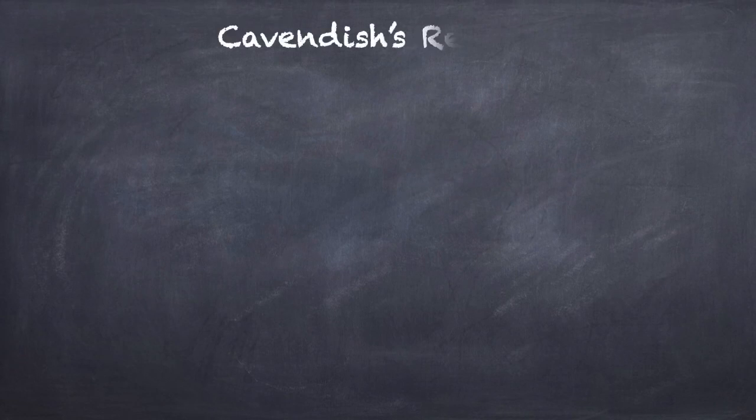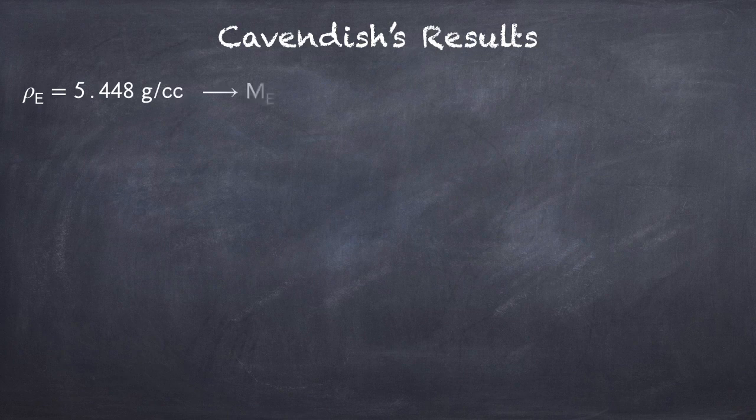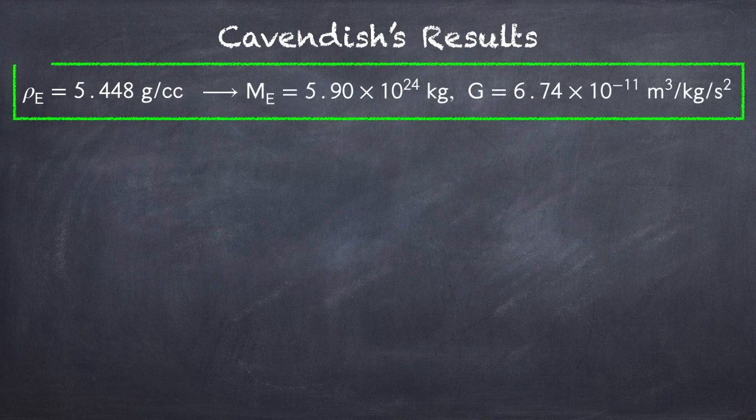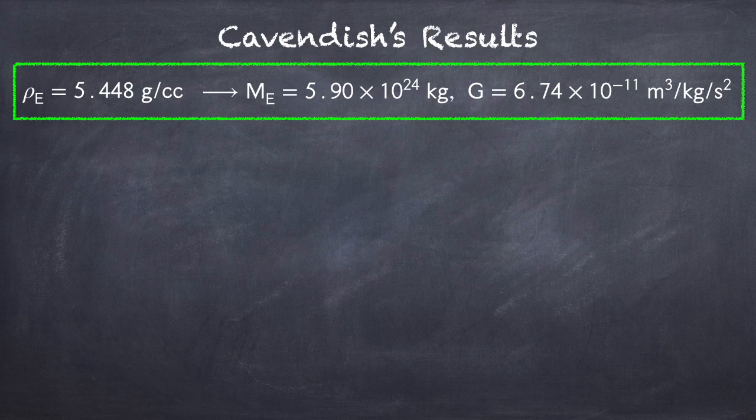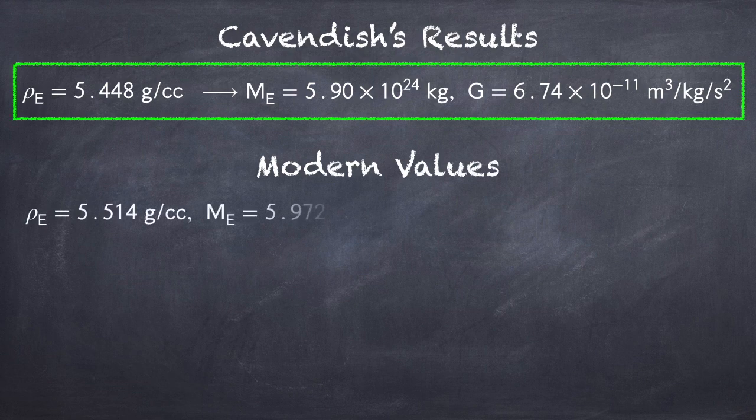And so Cavendish conducted his experiment, and he found that the average density of the Earth was just under 5.5 grams per cubic centimeter. Which implies that he found the mass of the Earth to be 5.9 times 10 to the 24 kilograms, and Newton's constant to be 6.74 times 10 to the minus 11 meters cubed per kilogram per second squared. Comparing his results to the modern values, we can see that he was very accurate.